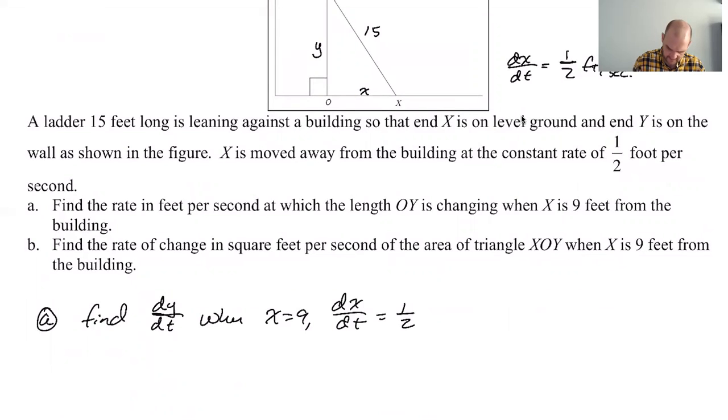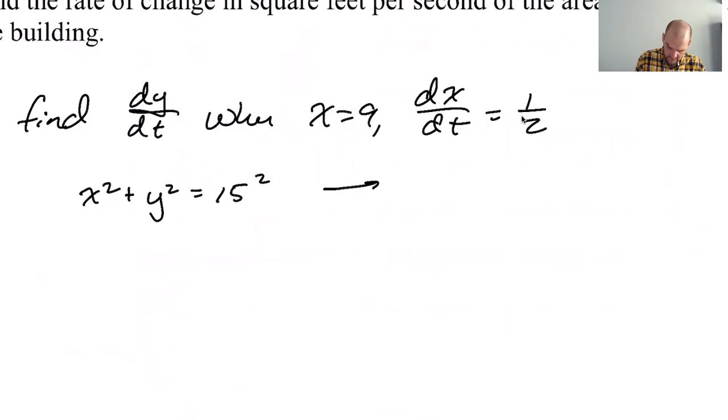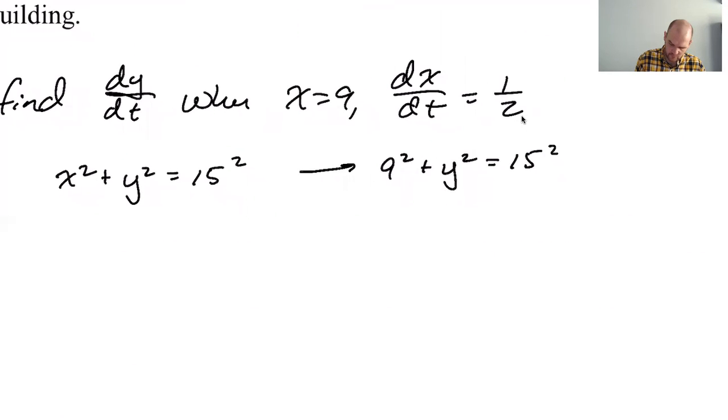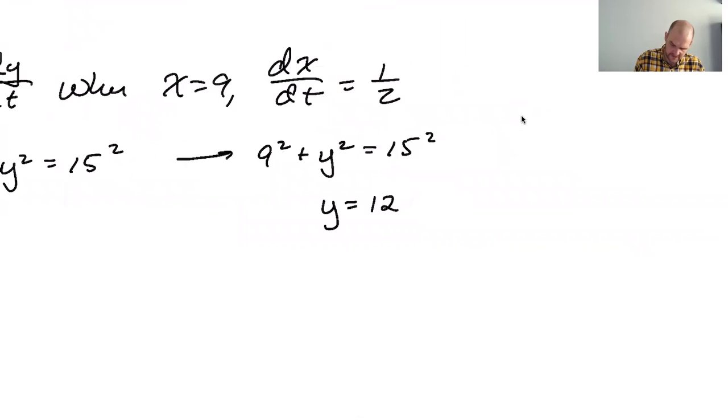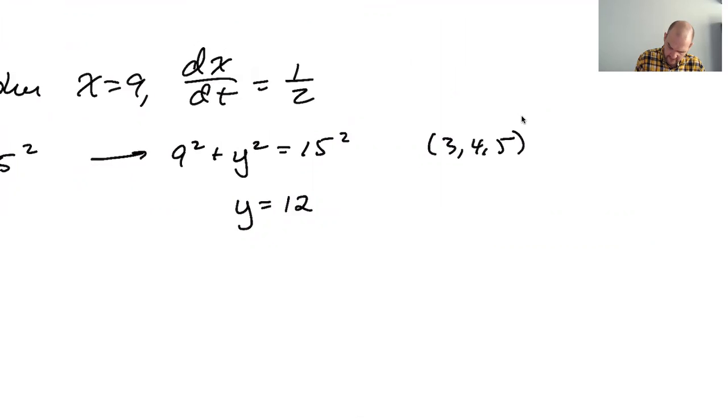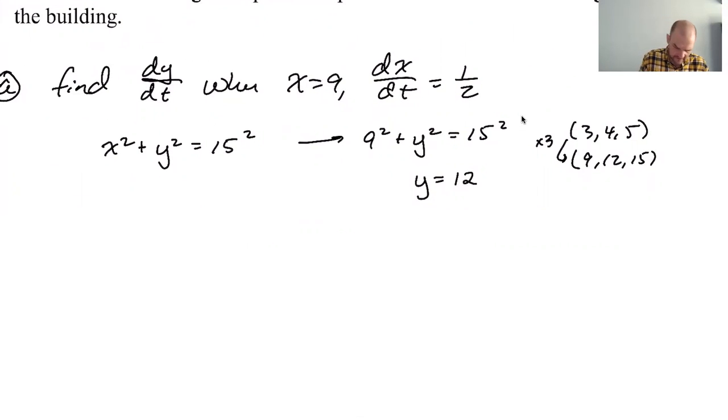Pythagorean theorem, X squared plus Y squared equals 15 squared. So if X squared plus Y squared equals 15 squared, we're going to need, eventually, we're going to need to know what Y is. So from that, we know that nine squared plus Y squared equals 15 squared. That's a 3, 4, 5 squared, 3, 4, 5 multiplied by 3. So this is going to be 12. So 3, 4, 5. And if we multiply by 3, we'll get 9, 12, 15. Always look for Pythagorean triples. They use them pretty much all the time because you're supposed to know them and it speeds up the calculations and everything.